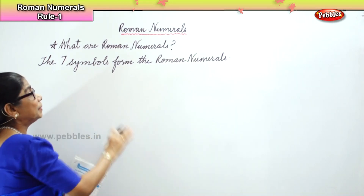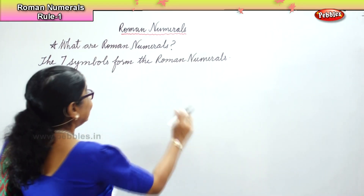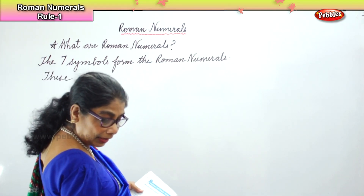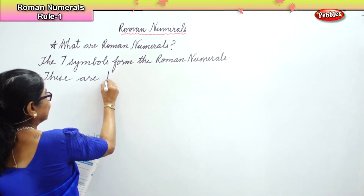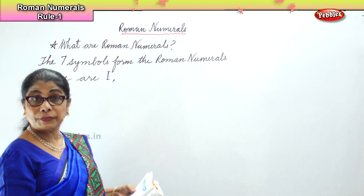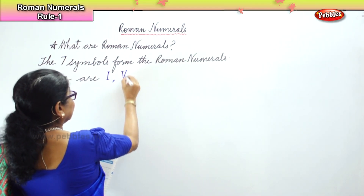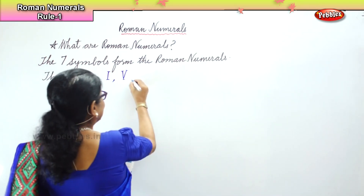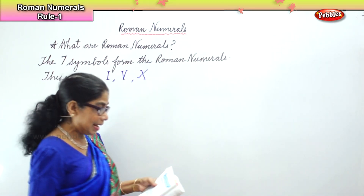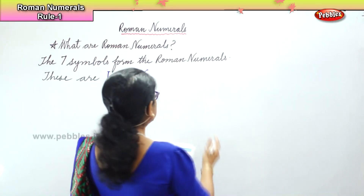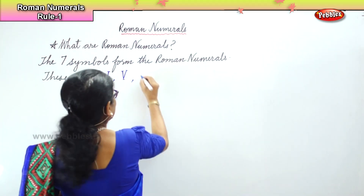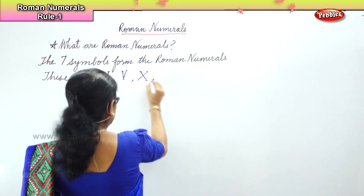Now, these are the seven main symbols of the Roman numerals. The very first one — this is called one. Then we have five. Then we have ten. All this to be written very, very carefully. Then you have fifty.